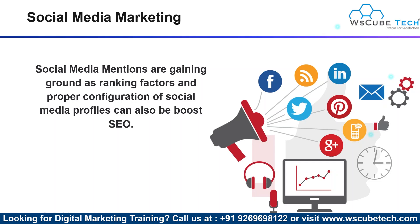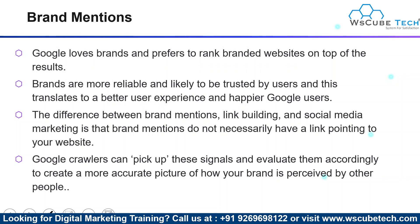The next most important technique of off-page SEO is social media marketing. Social media mentions are gaining ground as ranking factors, and proper configuration of social media profiles can also be a boost asset — one of the most important factors in SEO. Next, we have brand mentions. Google loves brands and prefers to rank branded websites at the top of results. Brands are more reliable and likely to be trusted by users, which translates to a better user experience. The difference between brand mentions, link building, and social media marketing is that brand mentions do not necessarily have a link pointing to your website. Google's crawler can pick up these signals and evaluate them to create a more accurate picture of how your brand is perceived by other people.